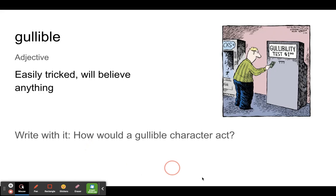Gullible. Easily tricked. Will believe anything. You can see here there's a gullibility test. One dollar. If he puts in the dollar, will he get anything from it? He will get his results of his gullibility test. He is gullible because he believes that he should put a dollar into the machine.